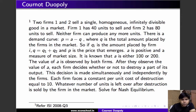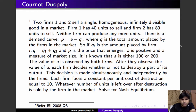In this video we'll solve a problem from the Indian Statistical Institute entrance exam 2008. There are two firms, one and two, selling a single homogeneous infinitely divisible good. Firm one has 40 units to sell and firm two has 80 units to sell. Neither firm can produce any more units — they can only sell what they have.